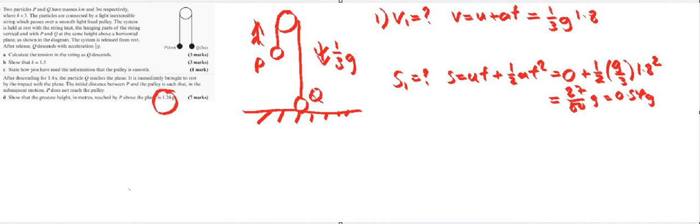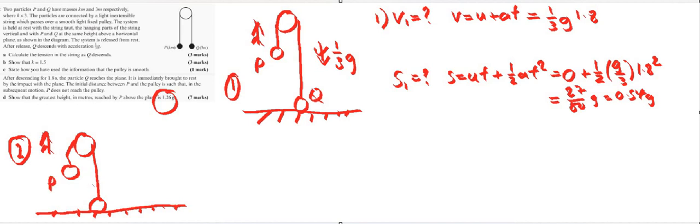Now the second part, this is the important bit because this is kind of the first part of our movement as Q descends and stops. The second part of our movement is where now there's our pulley and Q is on the ground. Q is stopping and now our string is no longer taut. There's no tension in our string. P has not instantly stopped, so P is only moving under gravity.